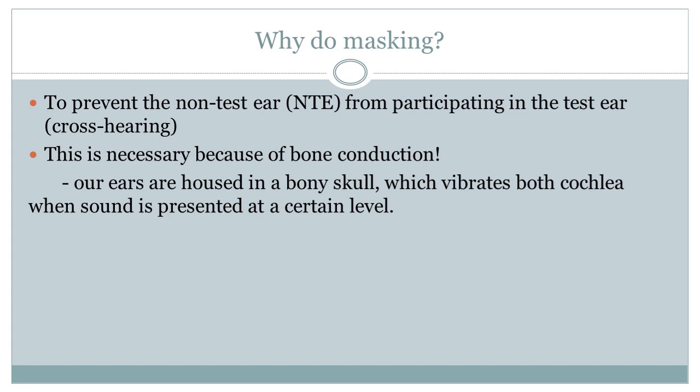Suppose you are giving a tone to the child's right ear via air conduction. The sound may cross over and be heard by the left ear — this is called cross-hearing. To fix this, we apply masking to the non-test ear. This is also necessary for bone conduction because our ears are housed in bony skulls, and sound vibrates both cochleae when presented at a certain level, causing both ears to respond.